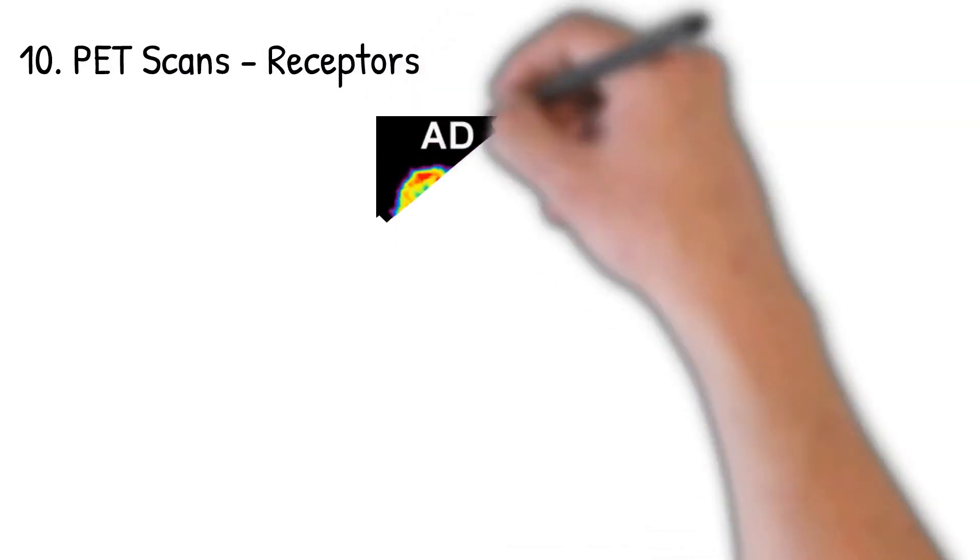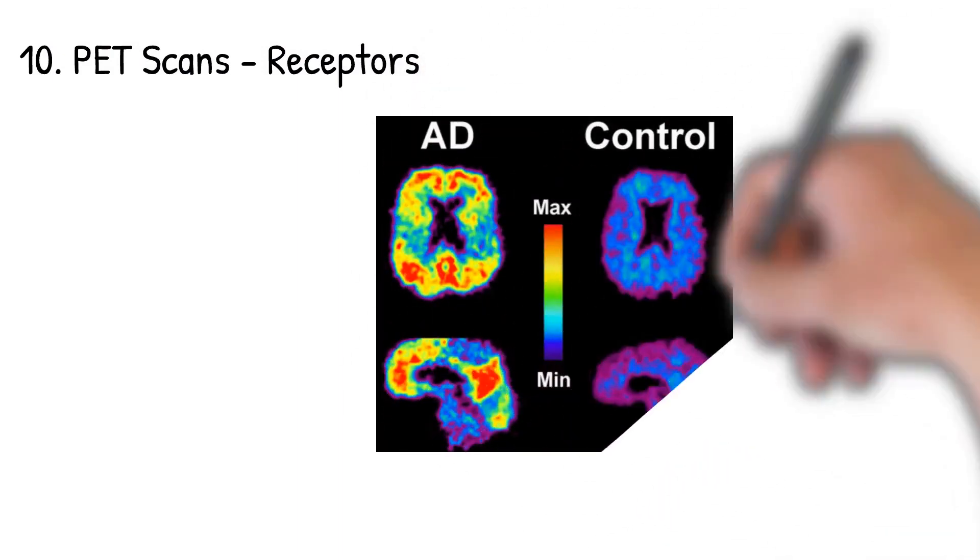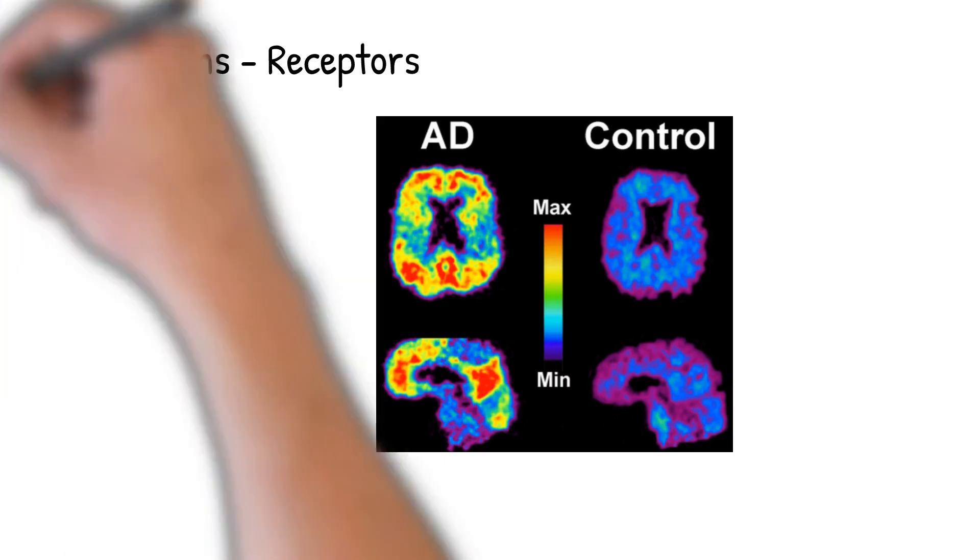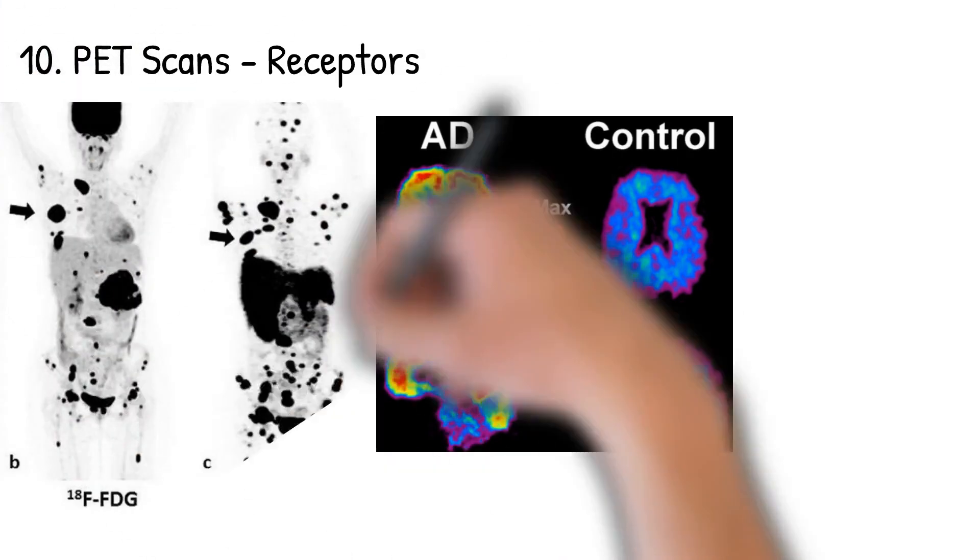But PET scans are also done with other radiopharmaceuticals, including receptor imaging. So here's a dementia patient with Alzheimer's disease. We're actually using a new peptide called amyloid or beta-amyloid imaging. And that allows a different kind of test that is a bit more sensitive.